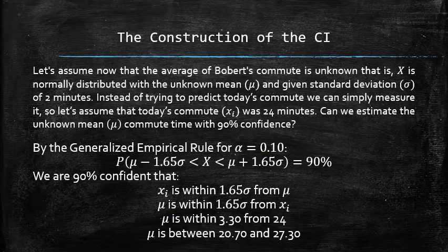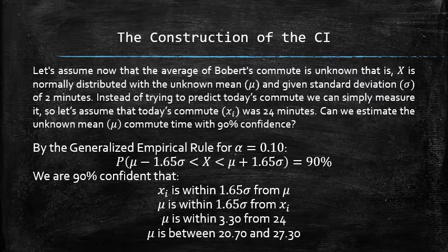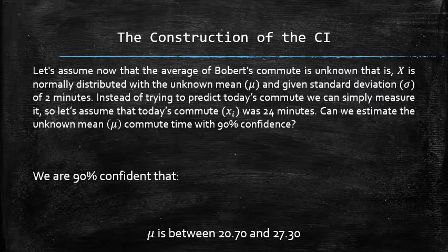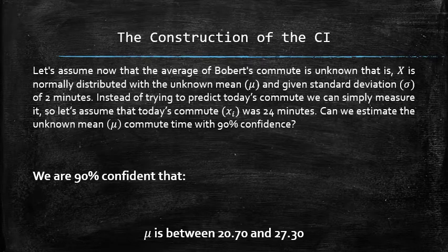As a result, we obtained a 90% confidence interval for the unknown mean commute time based on a single random observation.